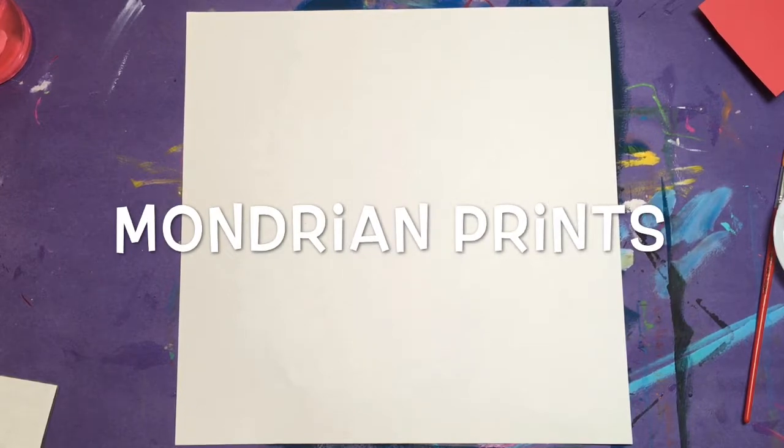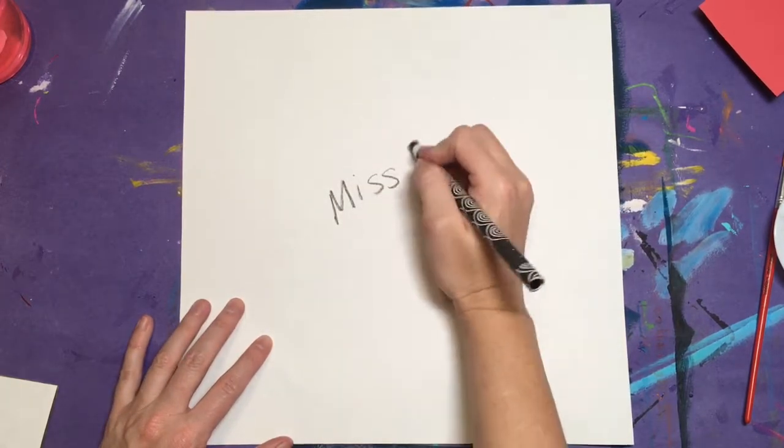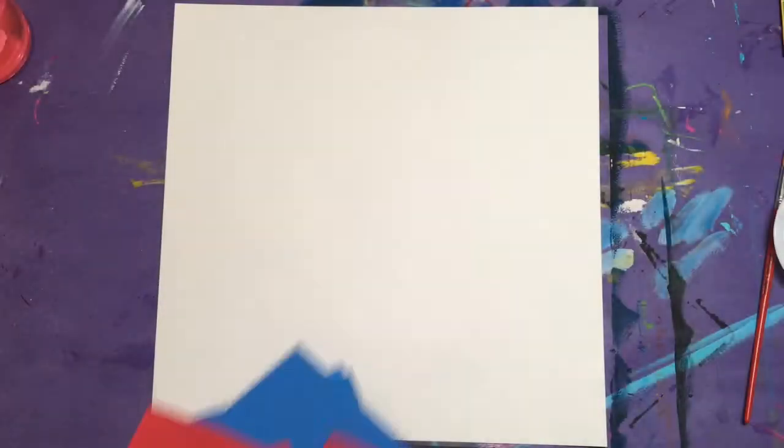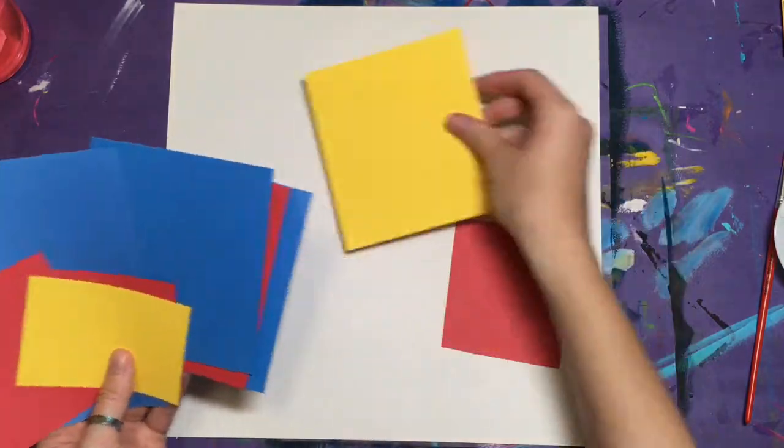Today we are going to create a masterpiece in the style of Pete Mondrian using the primary colors and bold black lines. Pete Mondrian used the shapes, squares, and rectangles in his artwork.